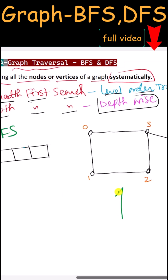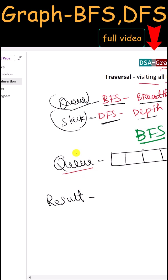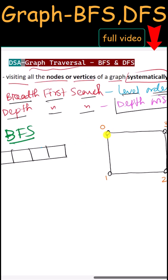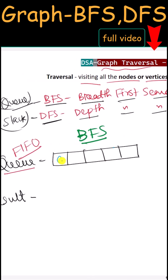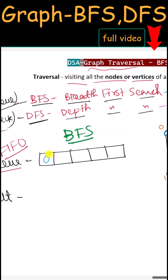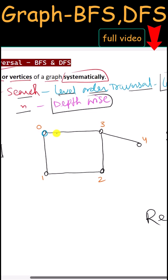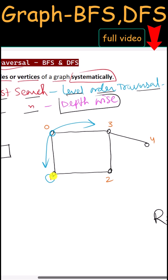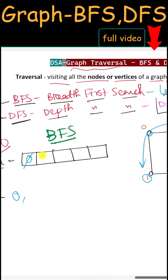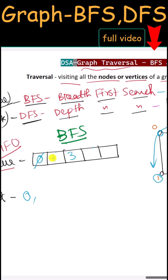Let's now traverse this tree using BFS. We're going to use the queue data structure, which follows the First In First Out approach. We start the traversal from node 0, so node 0 will be inserted in the queue. We have visited node 0, so we include it in our result. Now we have to visit the adjacent nodes to node 0.